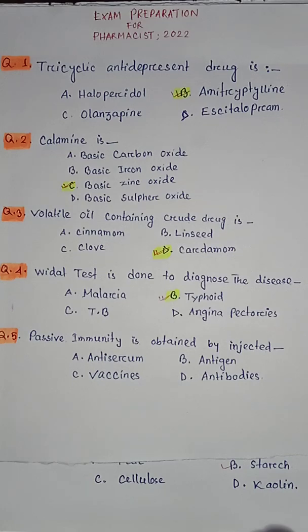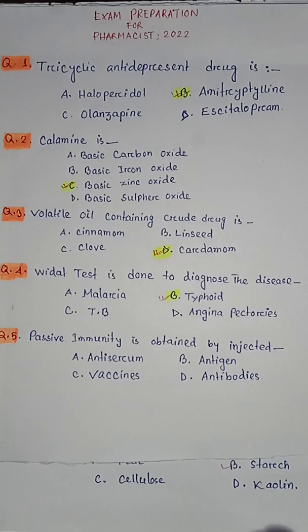Question number four: Widal test is done to diagnose the disease — option A malaria, option B typhoid, option C TB, option D engineer factories. So the correct answer is option B typhoid.